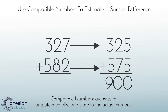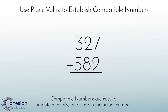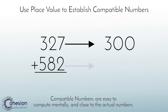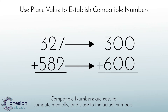The second way to convert to compatible numbers is by using place value to round. As seen in the video, use place value to round to the nearest 10 or 100. For example, students round 327 to the nearest 100, which would be 300, and round 582 to the nearest 100, which is 600, and when added together, the sum is 900.